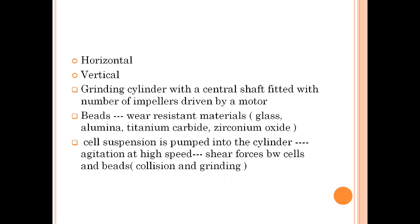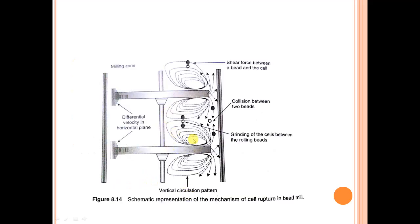As the beads and cells are mixed within the bead mill, there is continuous collision and grinding between them, which leads to breaking up of the cell and release of contents. The bead is made up of wear-resistant material such as glass, alumina, titanium carbide, or zirconium oxide. The cell suspension is pumped into the cylinder and agitated at high speed, which leads to shear forces. The shear forces between the cells and the beads cause collision and grinding — this is the most important mechanism to understand.